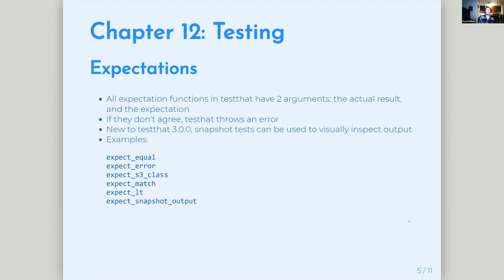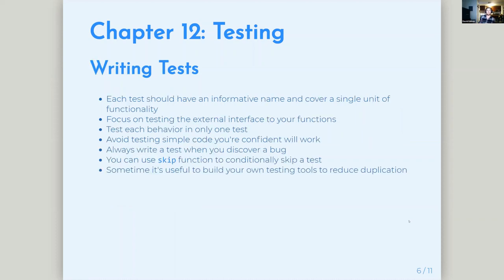For writing unit tests: each test should have an informative name and cover a single unit of functionality. The book recommends testing the external interface to your function — you'd usually want to test things that users of your function are going to do. You don't necessarily need to test every single internal function in your package. Test each behavior in only one test — don't duplicate your tests, as it just adds needless overhead.